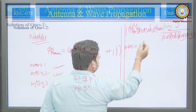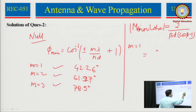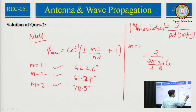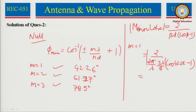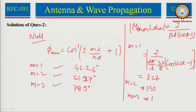The minor lobe magnitude formula for an endfire array is 2 / (βd cos φ − 1), where β = 2π/λ and d = 3λ/8. Substituting: for m = 1 (φ = 42.26°), the magnitude is 3.27. For m = 2, the magnitude is 1.59. For m = 3, the magnitude is 1.06.